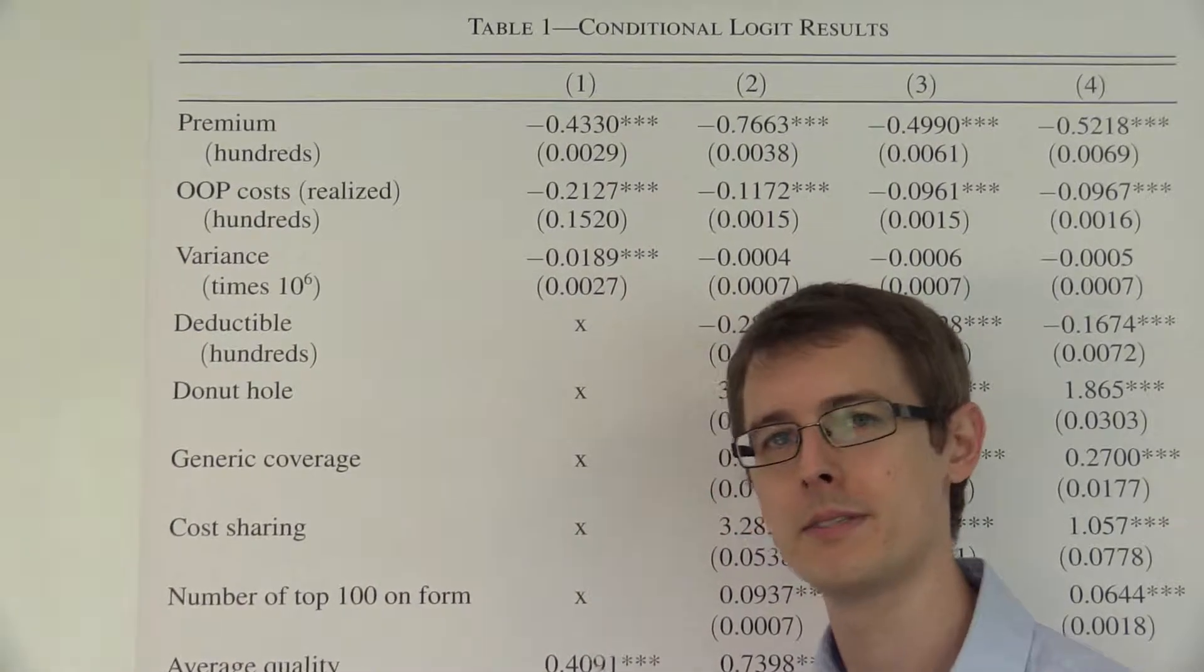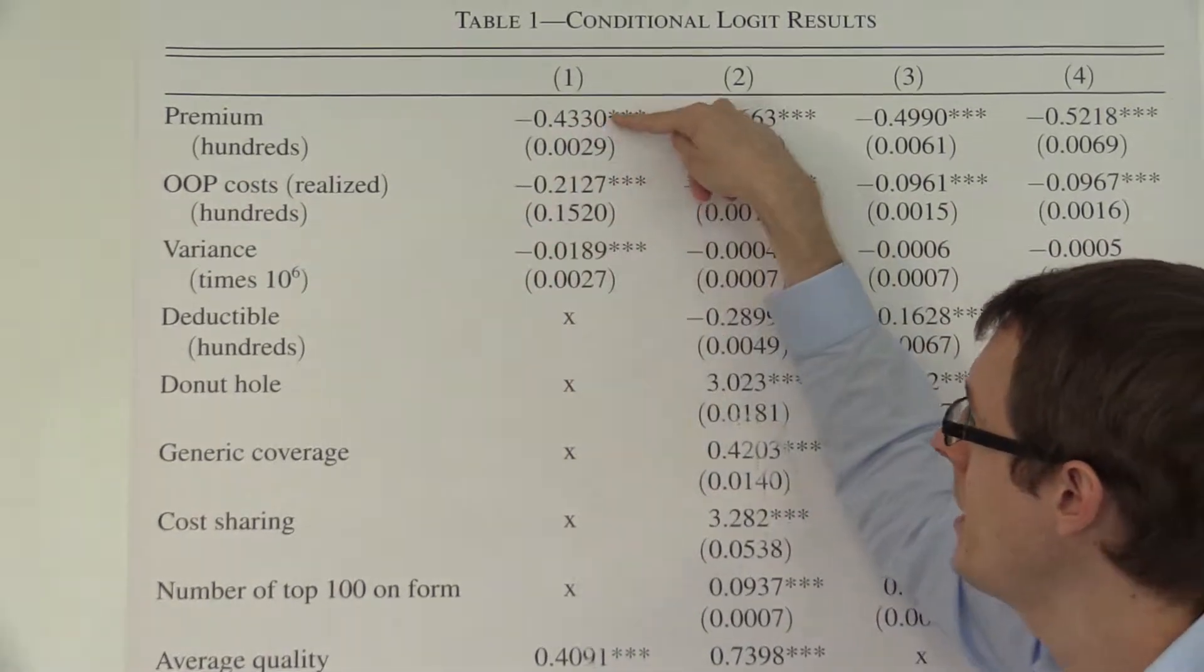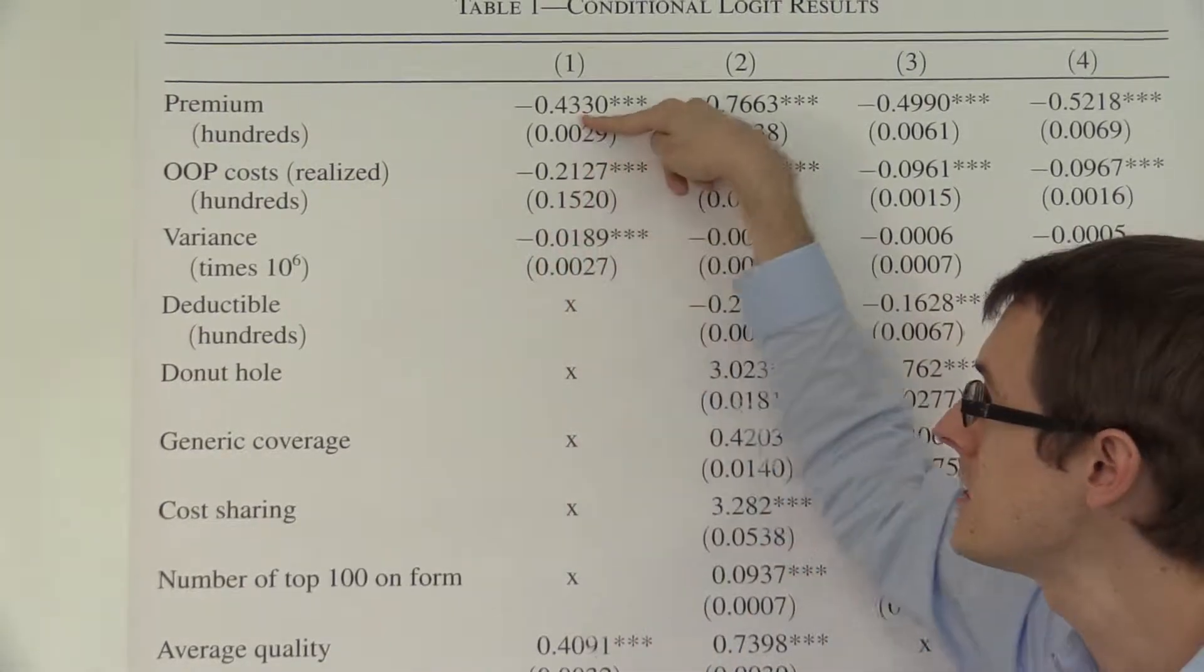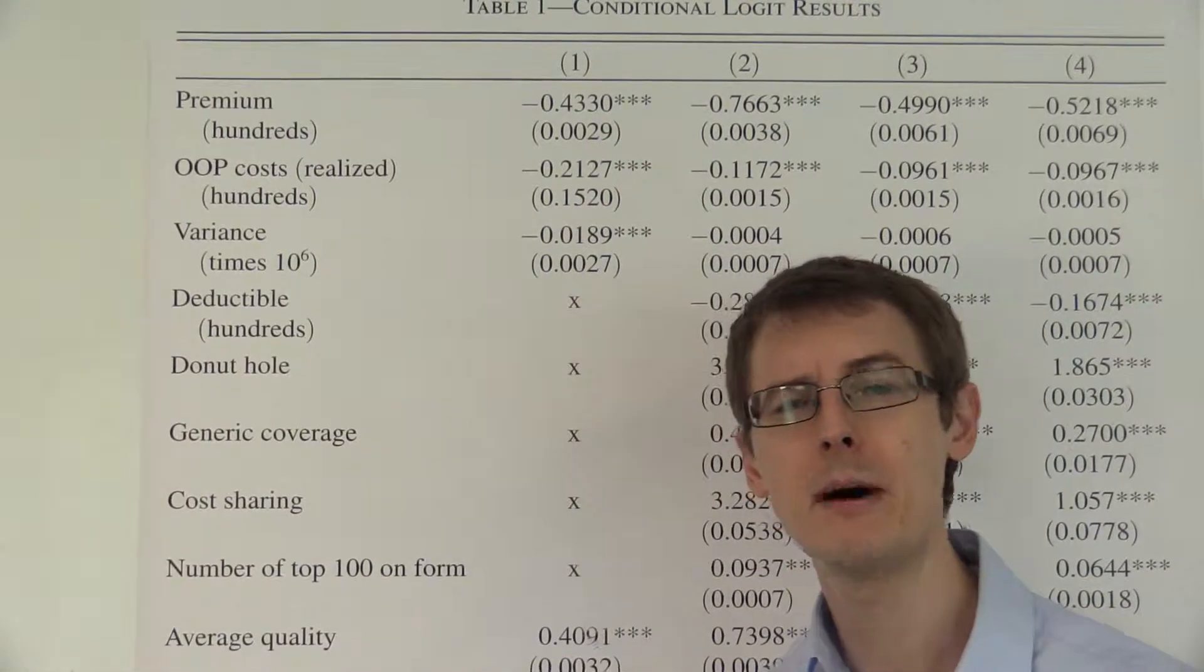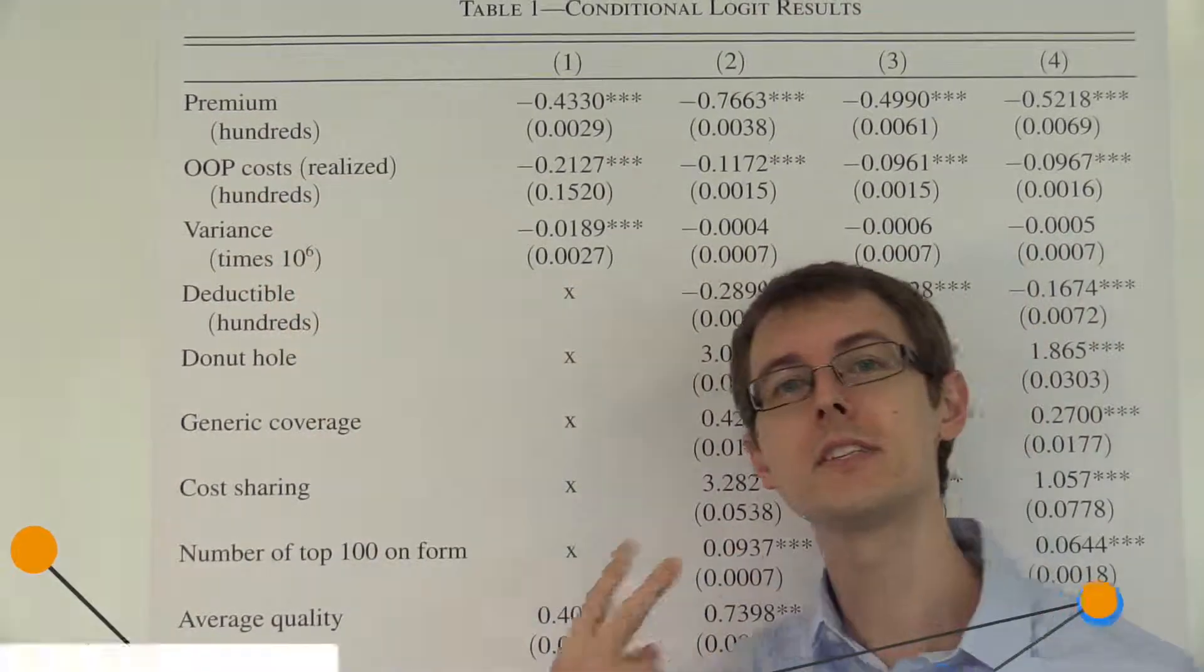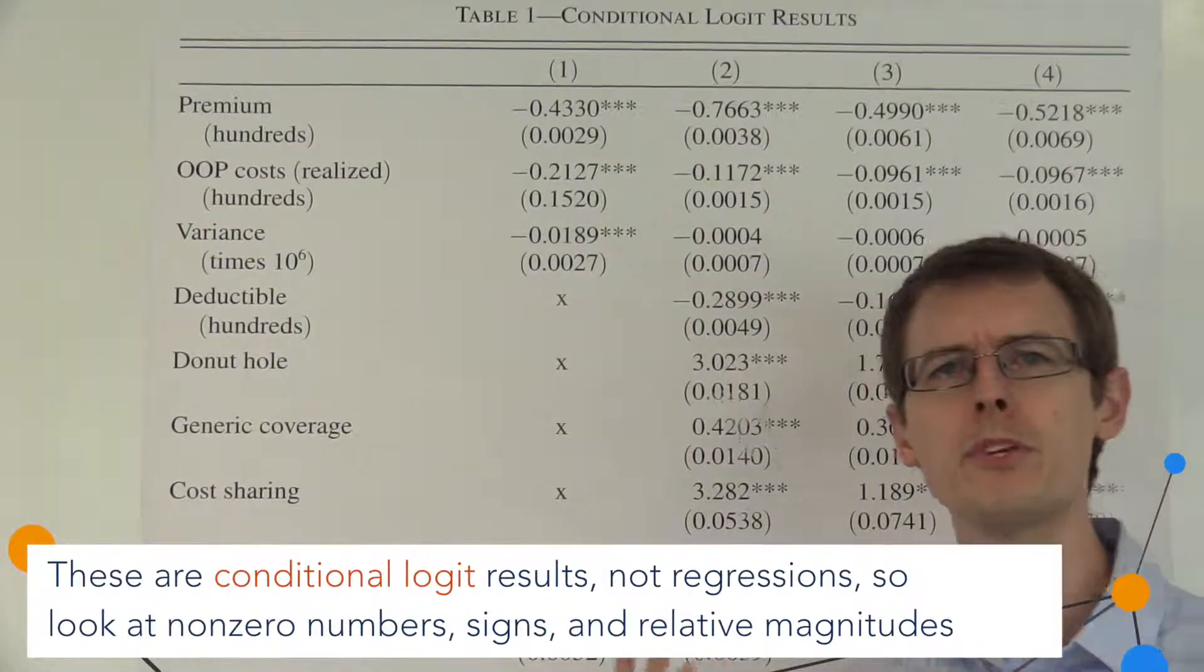Now, we can also compare relative magnitudes. So here, we've got minus 0.43 and here we've got minus 0.21. So this is about twice as large as this. That means people dislike premiums about twice as much as they dislike out-of-pocket costs. So that's the second thing we can learn from this table. Okay. Well, what are their results?